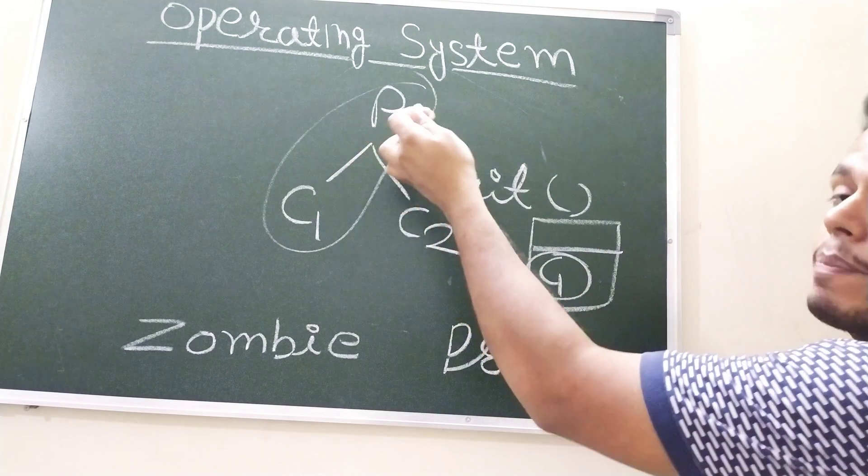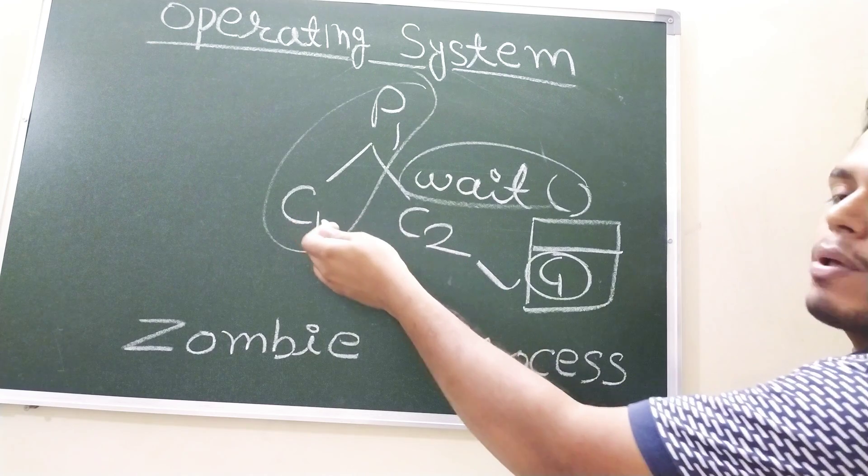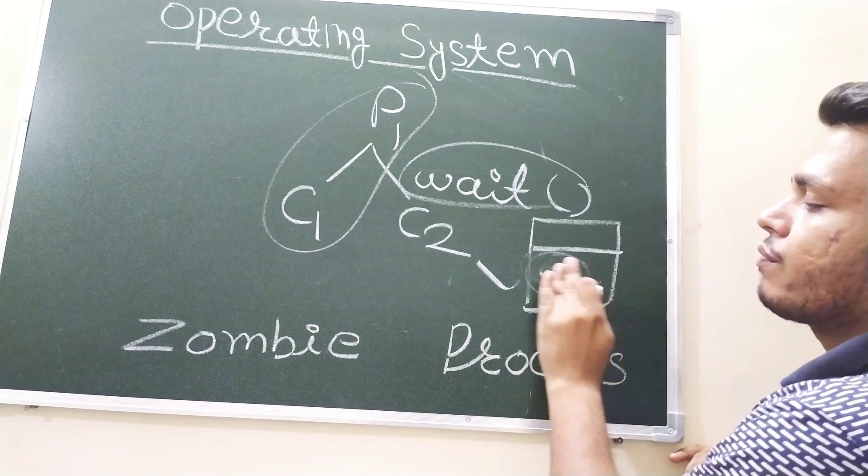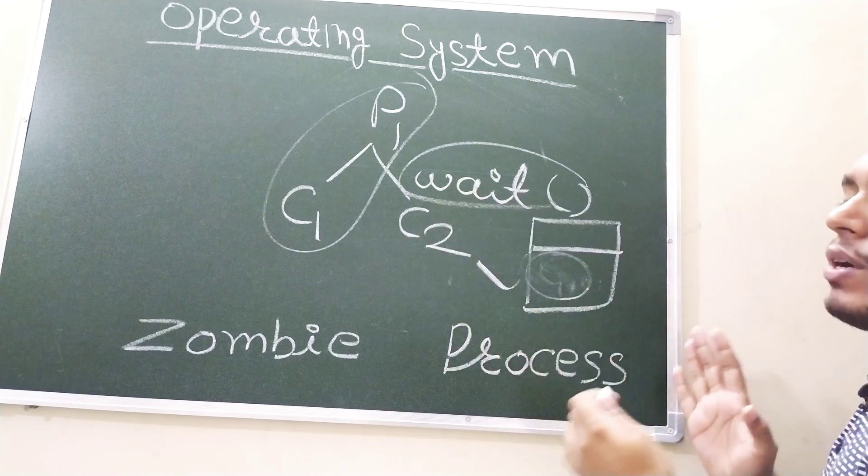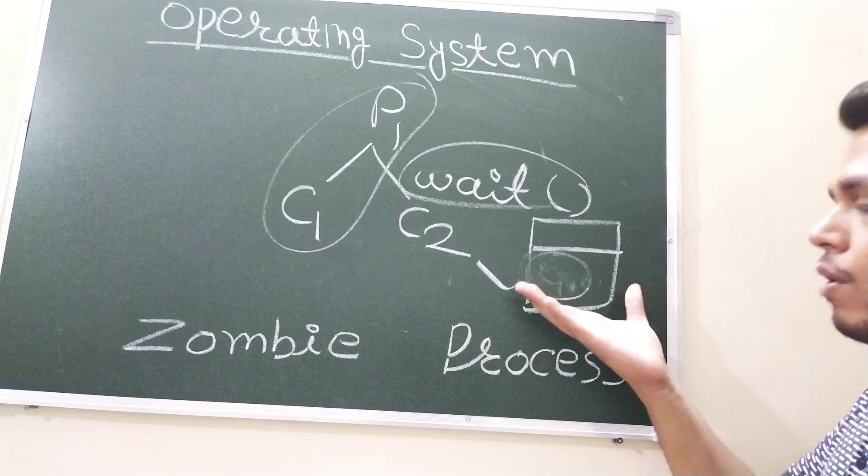Once the P1 or parent process sends the wait signal and gets the data that the process has completed, it will remove this process from there. That is how we terminate or remove the zombie processes from the process tables.